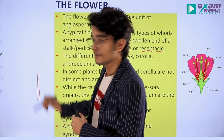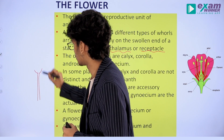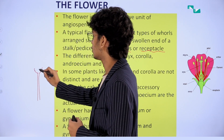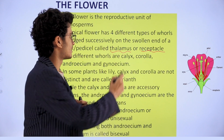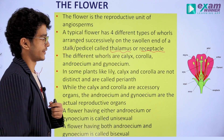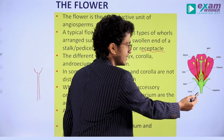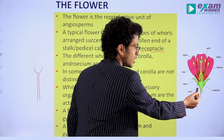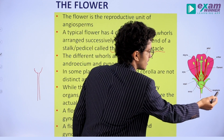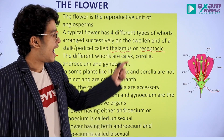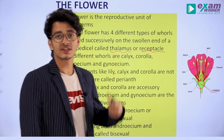The flower sits on a stalk, and the swollen region of that stalk is the thalamus and the receptacle. You can see here — this is a stalk, and in the swollen region we have the thalamus and receptacle, on which the other floral whorls are arranged.